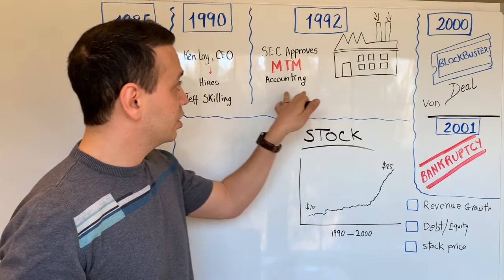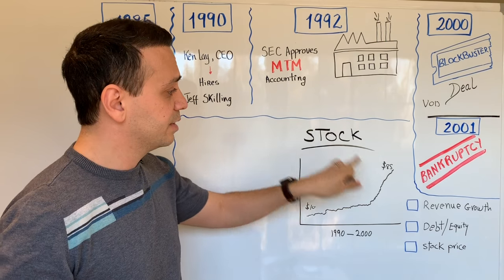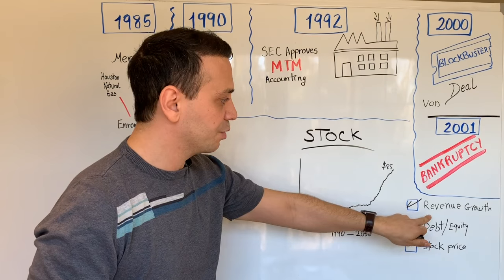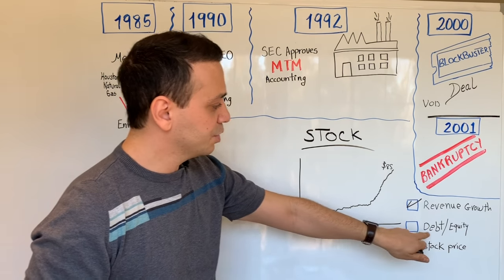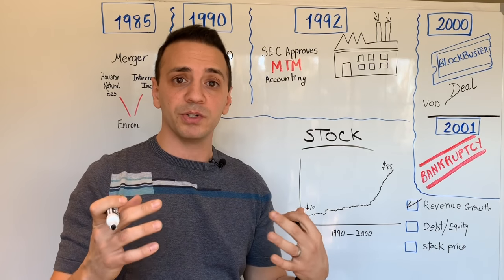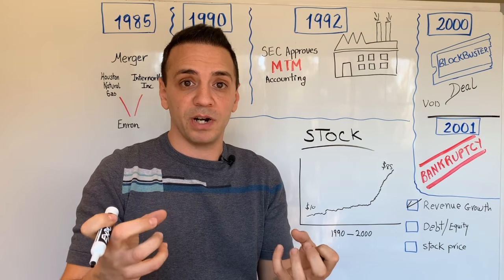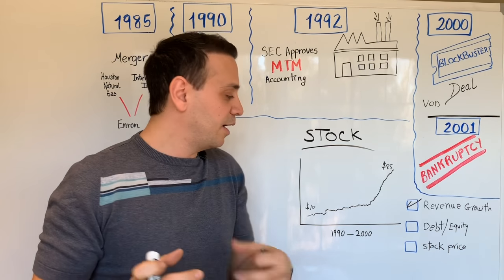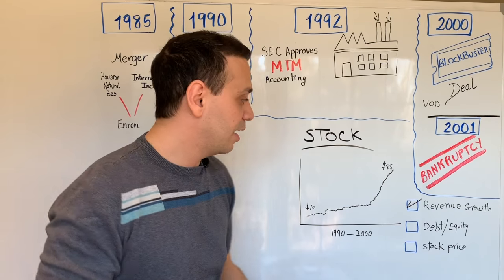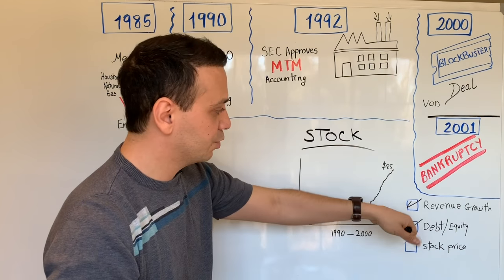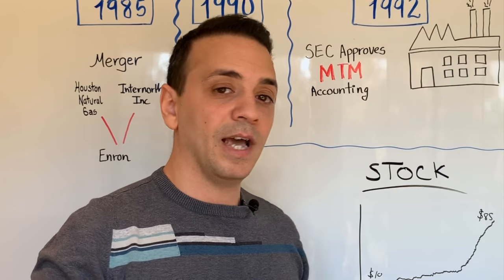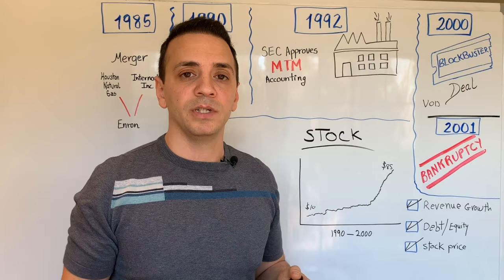For investors — both retail and institutional — the stock was a no-brainer to invest in. Because of the mark-to-market practice, revenue growth was incredible. This was a stock with amazing revenue growth, and because you had such impressive revenue on your books, you were able to show tons of profit, which inflated retained earnings and made the debt-to-equity ratio really appealing. As a result, the stock price was going through the roof.